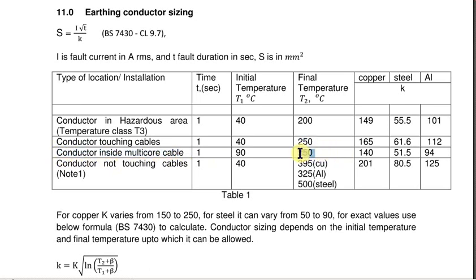When a conductor is not touching any cable, the final temperature can be a higher value. It can be 395 for copper and 500 for steel. But this case is very rare because very rarely you will find a conductor which is not touching any insulation. So better go for the first two cases.